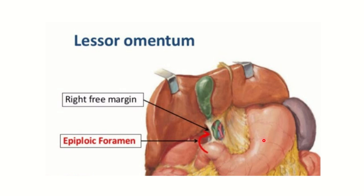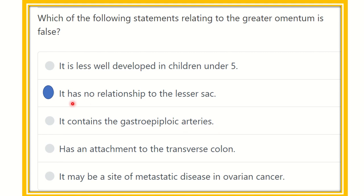We can see the lesser omentum and the greater omentum, and there is a communication between the greater and lesser sac. This communication is called the epiploic foramen, or foramen of Winslow. So there is a communication between the lesser sac and greater sac via this foramen. Therefore, the statement 'it has no relationship to the lesser sac' is not true, because the greater omentum communicates with the lesser sac via the epiploic foramen.